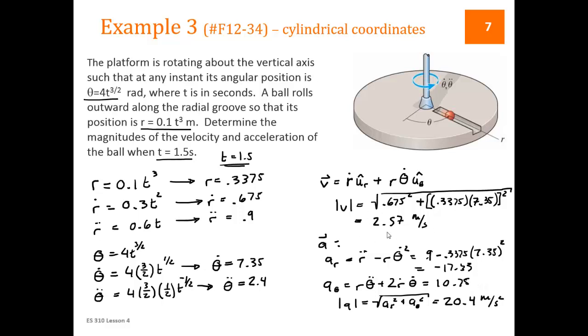The velocity, the magnitude of the velocity is 2.57, and the magnitude of the acceleration is 20.4. Notice those magnitudes aren't tied to the coordinates. So had we solved this using one of the other coordinate systems, the math would have been a whole lot more difficult, but we would still get 2.57 and 20.4.